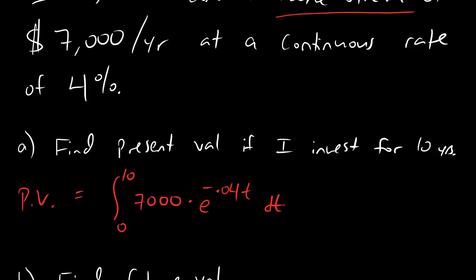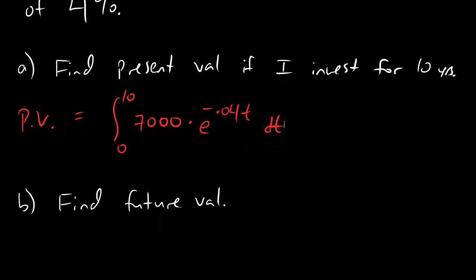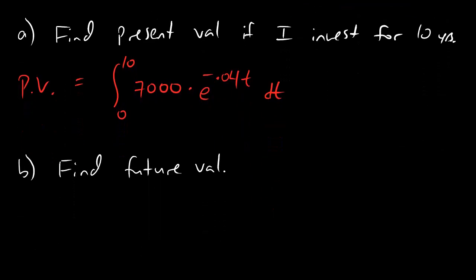That's my integral, and all you have to do is plug that into your calculator and you get a nice present value. Now, part B might say find the future value. There's a nice formula for future value, and it looks like this: future value equals present value times e to the rm.